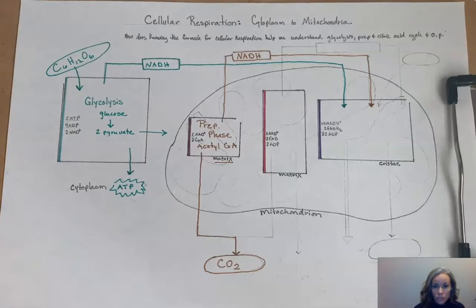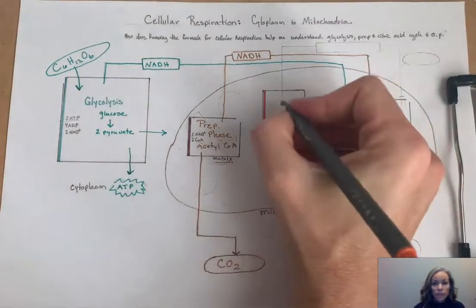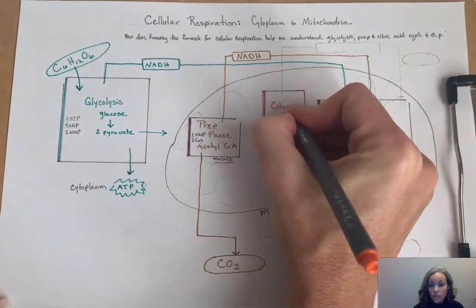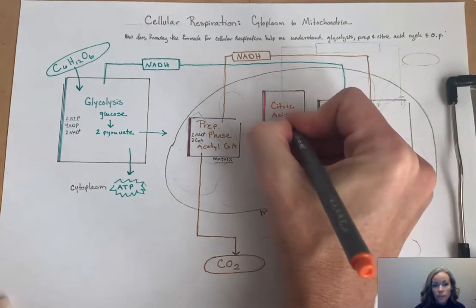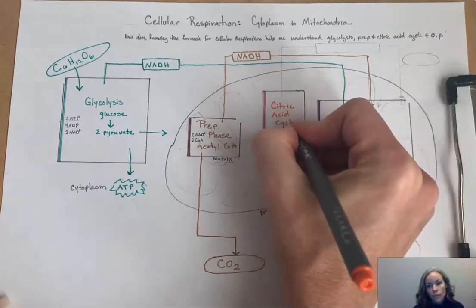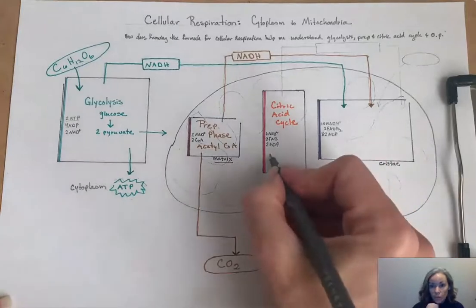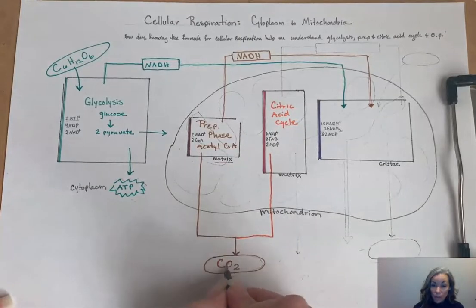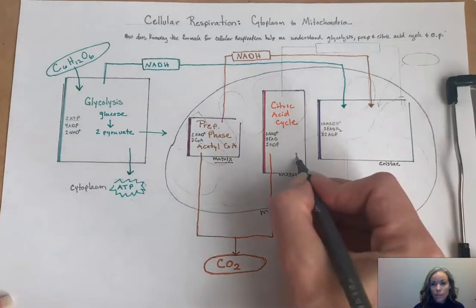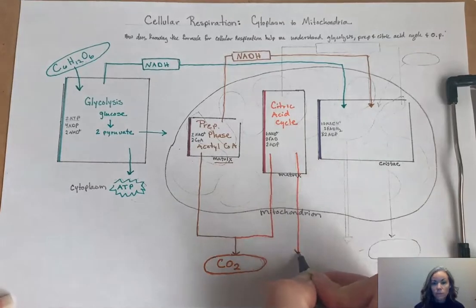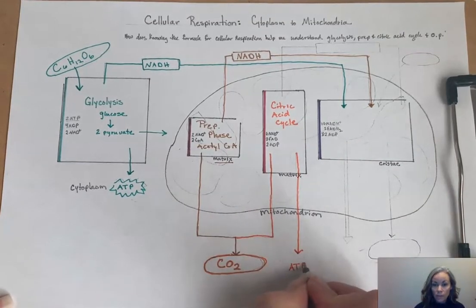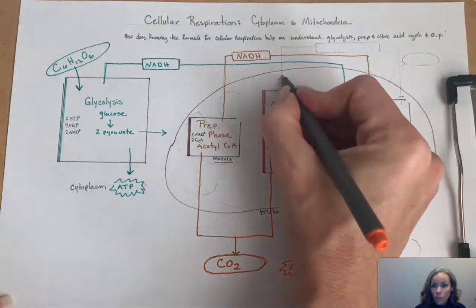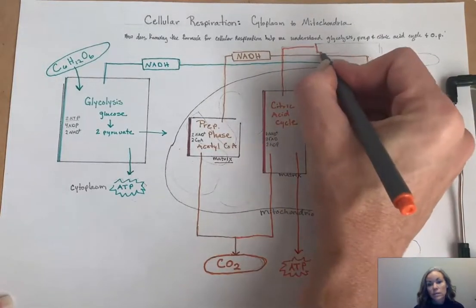The next stage where that acetyl-CoA gets used is in the citric acid cycle. It's also known as the Krebs cycle. You might have heard it as the Krebs cycle. The citric acid cycle uses that acetyl-CoA plus all those other molecules to make more energy-rich molecules, but one of the byproducts is CO2, so it releases CO2. It also happens in the matrix of the mitochondria. It does produce a small amount of ATP, 2-ATP. Notice we give it some energy action here in our diagram. The whole purpose of cellular respiration is to make ATP, so we want to make that stand out.